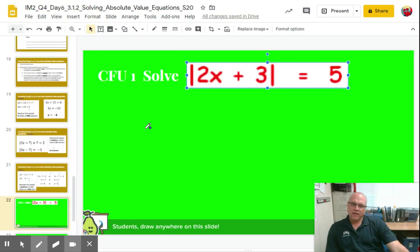All right, I want to give you the solution for CFU number one. If you want to add this to your notes it's optional, but some students like to have more examples. First step is we want to isolate the absolute value bars. In this example they're isolated - all we have on the left side is the absolute value 2x plus 3.